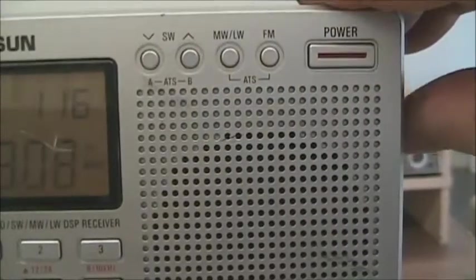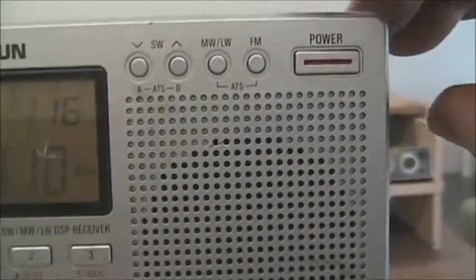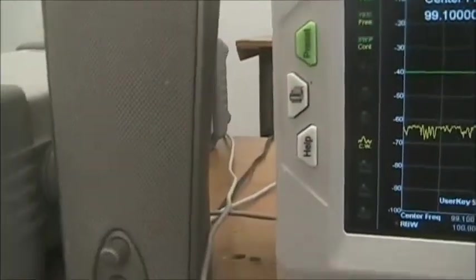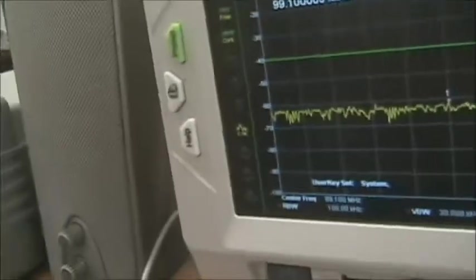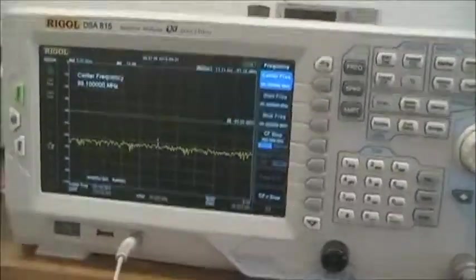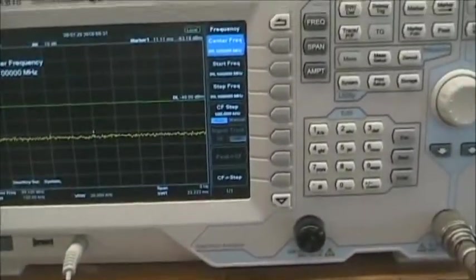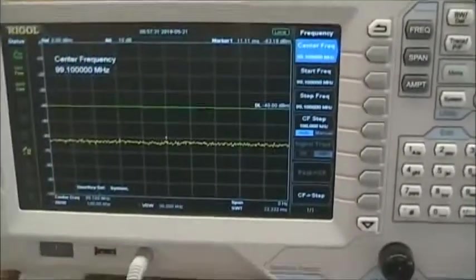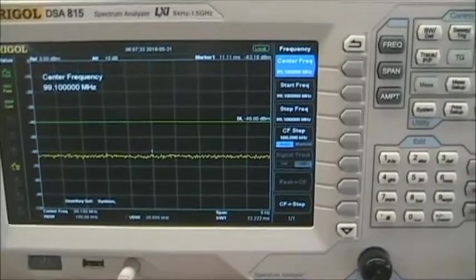So, we'll go up to 99.1 here. So, that channel did not come in as well. But, you get the idea of how we're demodulating. So, that's the simple process of using the spectrum analyzer as a radio receiver.